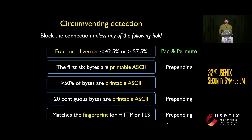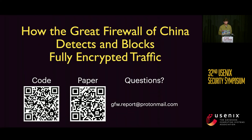In conclusion, we have inferred the rules the censor uses to identify fully encrypted traffic, and we have identified ways around it by simply padding or prepending different bytes. With that, I'm happy to take any questions.